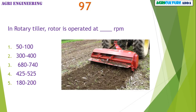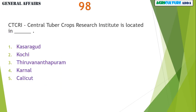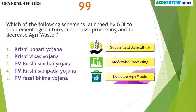In rotary tiller, the rotor is operated at 180 to 200 RPM. CTCRI — Central Tuber Crops Research Institute — is located in Thiruvananthapuram. Which scheme is launched by the Government of India to supplement agriculture, modernize processing and decrease agriculture waste? Pradhan Mantri Krishi Sampada Yojana.